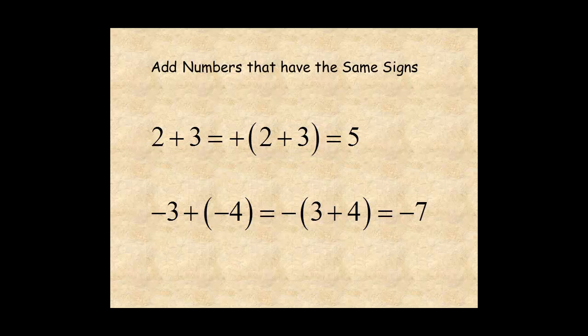From these examples, you can understand the rule for adding numbers that have the same signs. The rule has two parts. First, the sign of the sum is the sign of the two numbers. So the sum of two positive numbers is positive, and the sum of two negative numbers is negative.